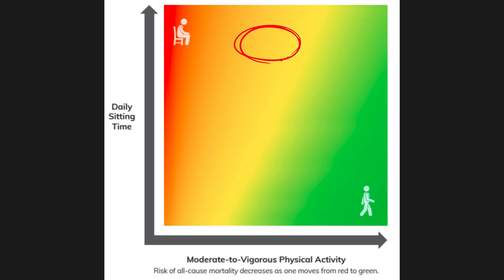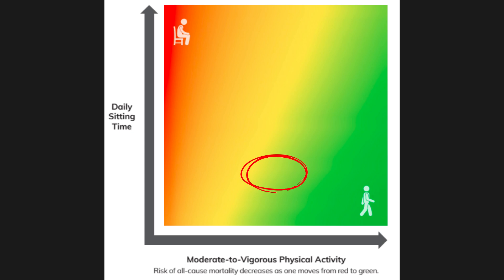What would be even better than doing that much activity would be decreasing the amount of time you spend sitting. So if you do work in a cubicle, theoretically, if you spent half your day sitting and half your day at a standing desk, you don't have to do nearly as much volume of exercise in order to combat the risk of all-cause mortality.